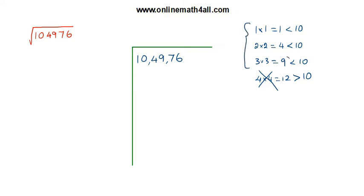So we have to consider the products one times one, two times two, or three times three. In all these three products the result is less than ten. Which one has to be chosen? We have to choose the one where we have the maximum value — that is three times three, which is nine. So we put three in the quotient and three below, and multiply three by three to get nine.